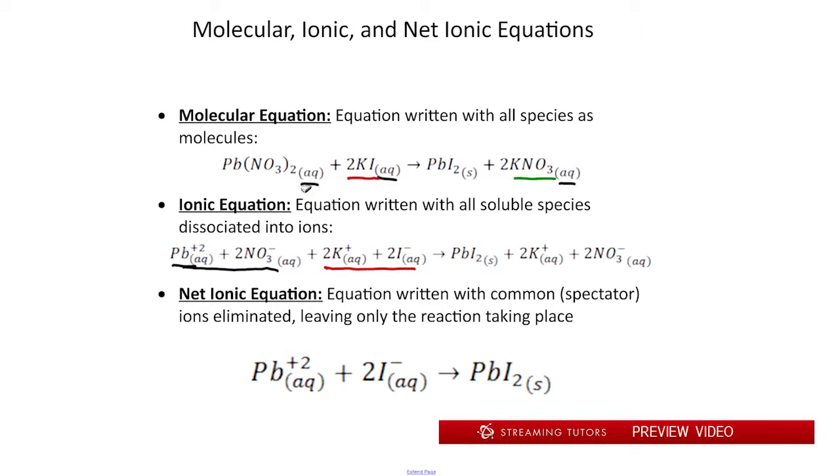PbI2 stays as a solid because it's not soluble. From KNO3, we get K+ and NO3-. That's our ionic equation, the one with all of these soluble species separated into their ions. Finally, the net ionic equation is where we cancel out like ions from both sides. We have 2 NO3 on both sides as well as 2 potassiums on both sides. So we cancel those out and leave our net ionic equation: Pb+2 plus 2 iodide ions form PbI2 solid. That's the net ionic reaction, the creation of our solid precipitate. We can do that for any precipitation or acid-base reaction to see what species comes out of solution.